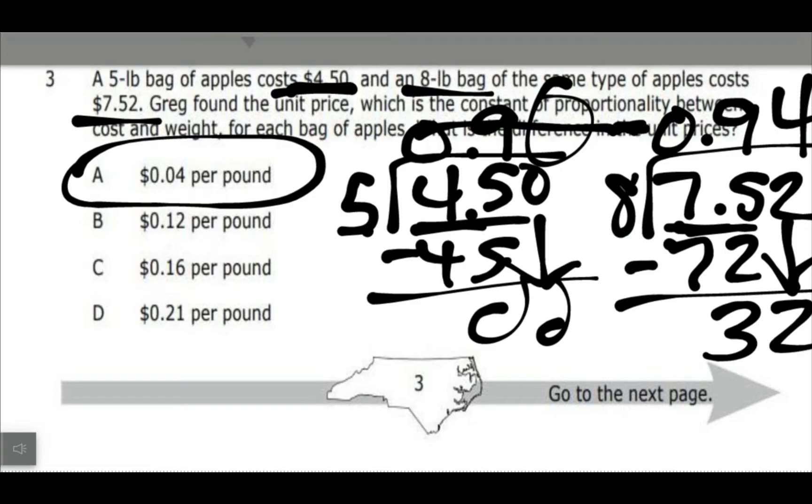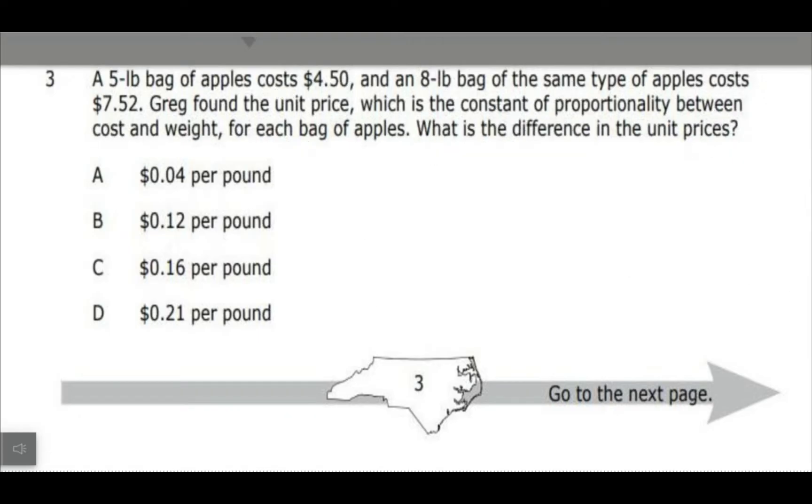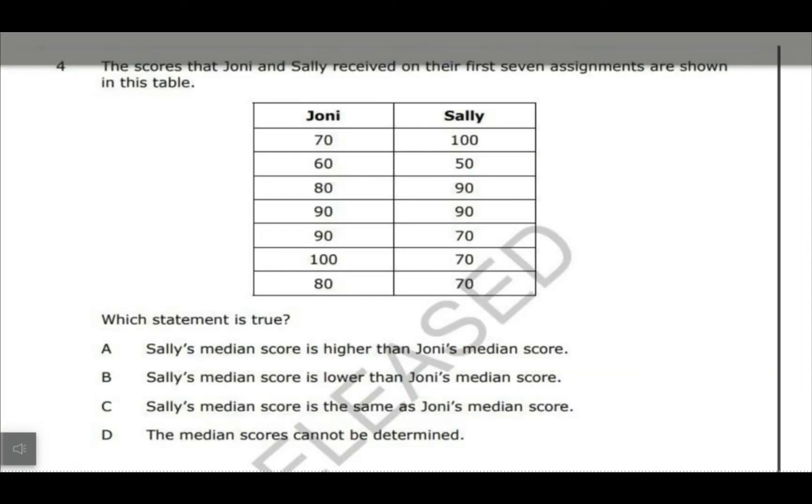So again, for unit rates, usually you just want to divide if it's the cost per bag, so I take the cost and divide it by how many pounds the bag was. Or Y divided by X. That's what we do for unit rates.